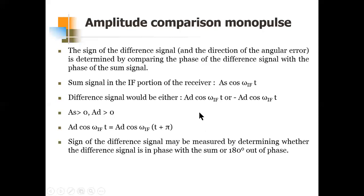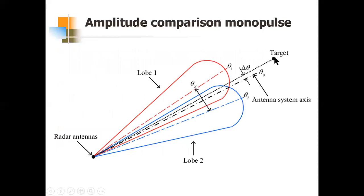The magnitude of the angular error signal is determined by comparing the echo signal amplitudes received in the two simultaneous squinted beams. If the target is closer to beam one, the amplitude received from that beam will be larger, and the system decides the target is nearer to that beam. This is the principle of amplitude comparison monopulse.